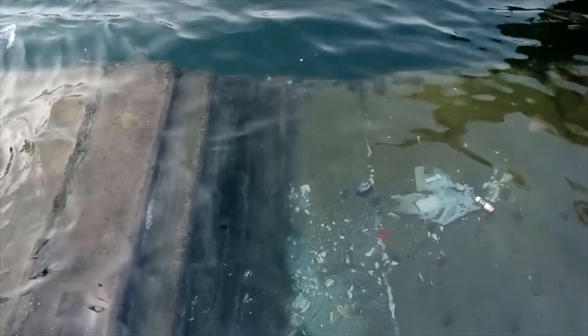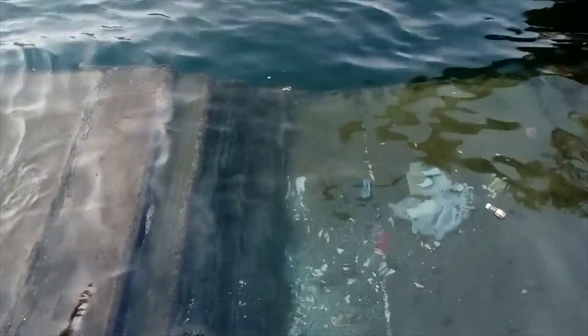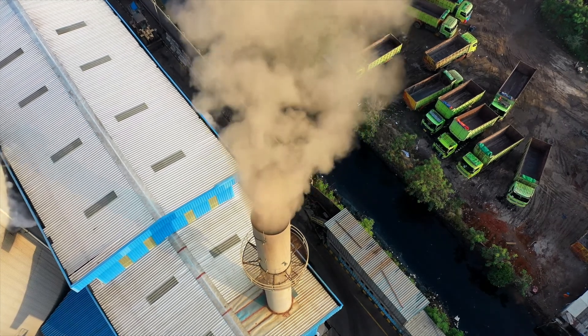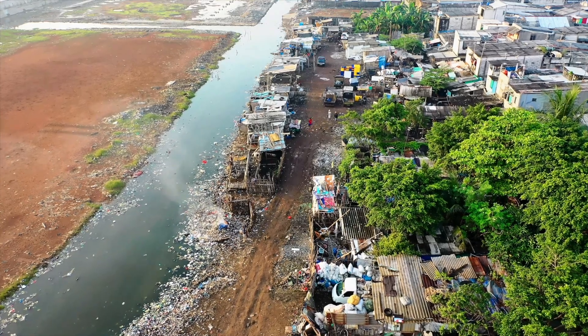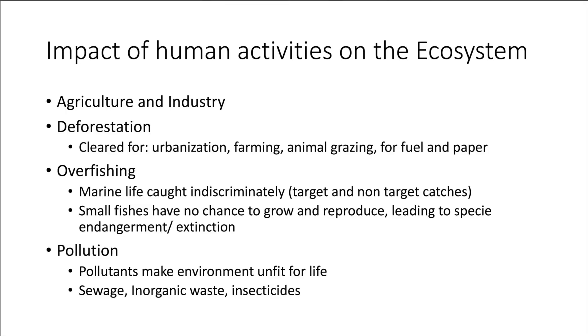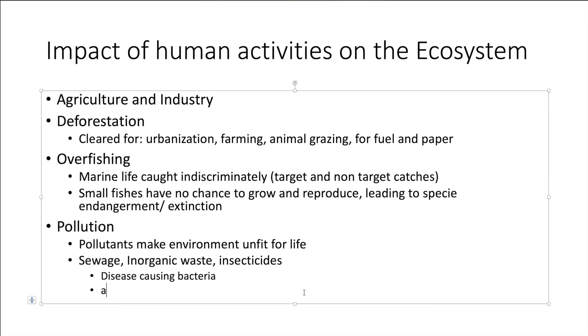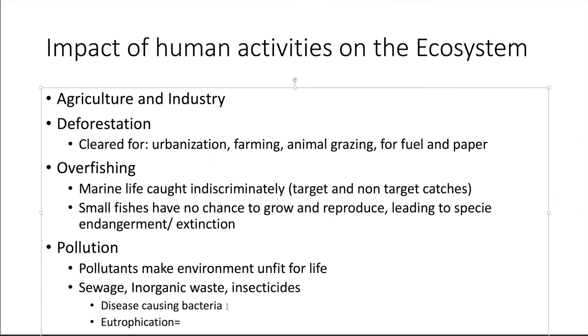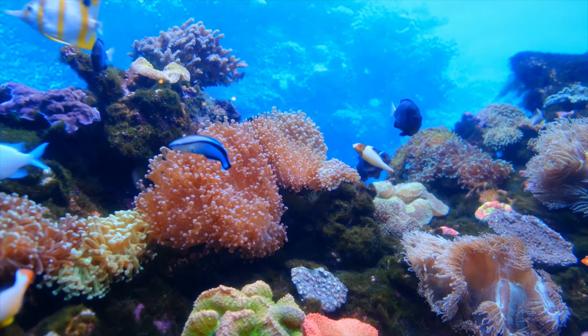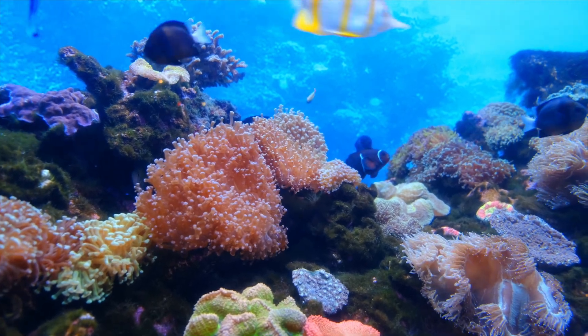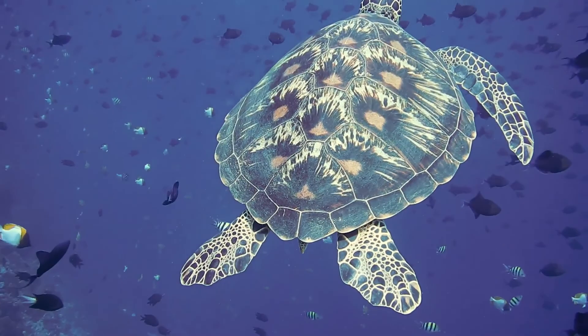And lastly, pollution - addition of substances that make life undesirable or unfit. These substances are called pollutants. So pollutants like sewage, inorganic waste and insecticides are the common pollutants that humans can introduce into the environment. So sewage, of course, can introduce disease-causing bacteria if left untreated and left in the environment. Eutrophication can occur due to the excess phosphates and nitrates available. Algae and water plants can grow excessively. This prevents sunlight from reaching the submerged plants and therefore the amount of oxygen that is produced in the water will be depleted and fishes in the water body can suffocate and die.